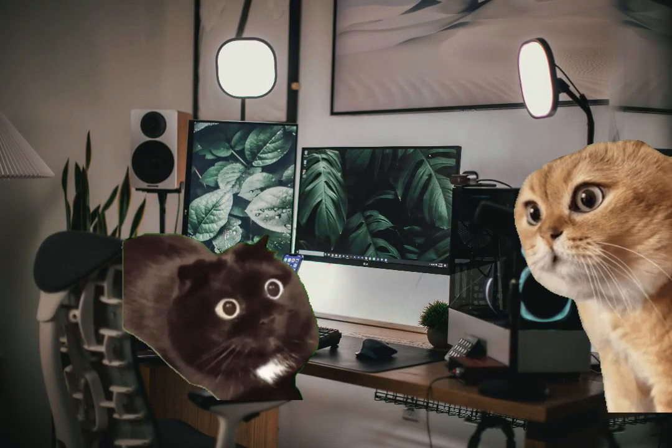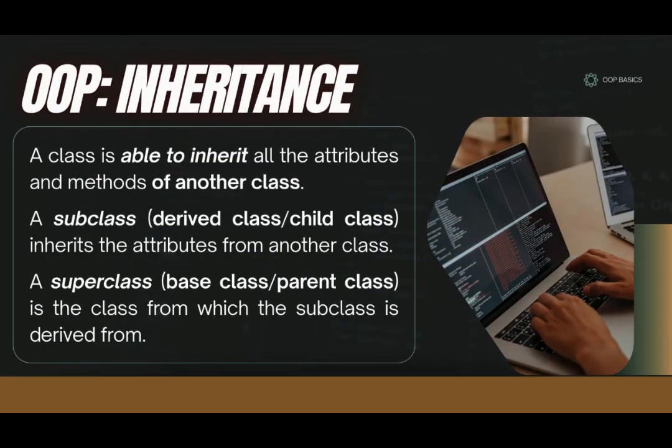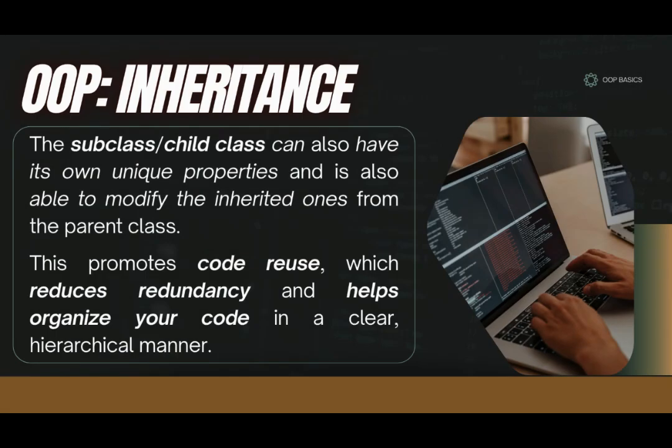While we're here, I might as well teach you about another one of the pillar concepts of OOP. In OOP, a class can inherit attributes and methods from another class — this is called inheritance. The class that inherits is called a subclass, or child or derived class, while the class it inherits from is called a superclass, or parent or base class. The subclass can add unique properties and modify inherited ones, promoting code reuse, reducing redundancy, and organizing code hierarchically.